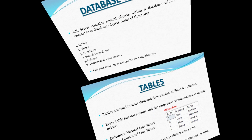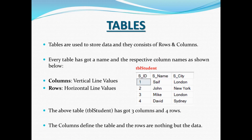Tables are used to store data and they consist of rows and columns. Every table has got a name and respective column names. Here we have an example table with the name tbl_student. This table has got three columns: the first column is Student ID, the second is Student Name, and the third is Student City.